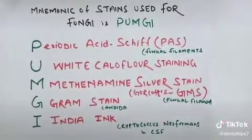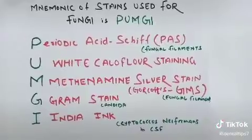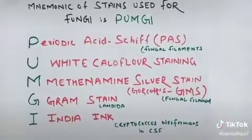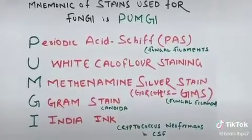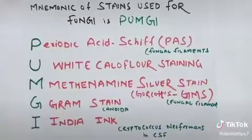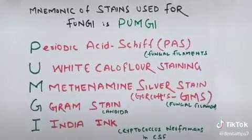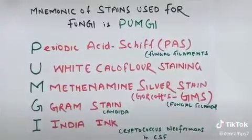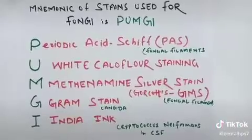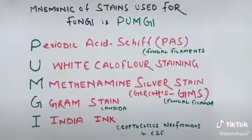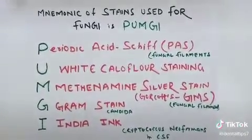Gram stain is very important: gram positive gives violet color, gram negative gives red color. India Ink is used for Cryptococcus neoformans in CSF.